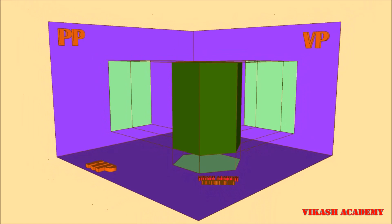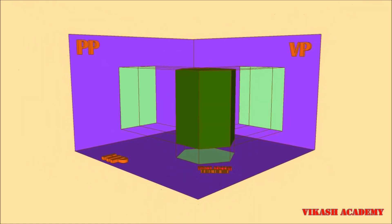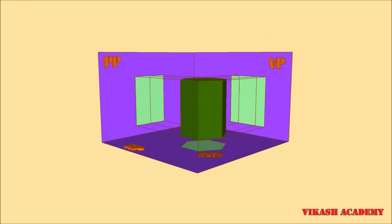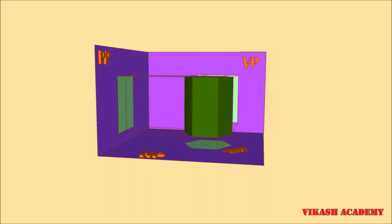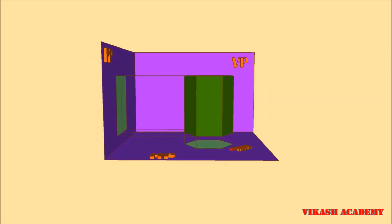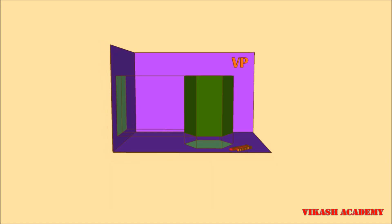When we observe this object from the front side, we are going to obtain the front view on the vertical plane. This is due to projector lines which are drawn from the hexagonal base and the hexagonal top to the vertical plane.